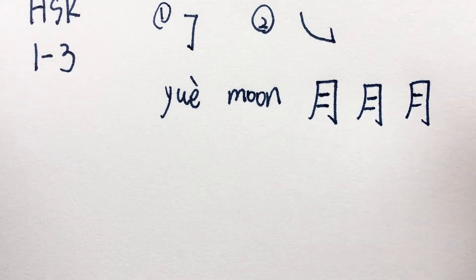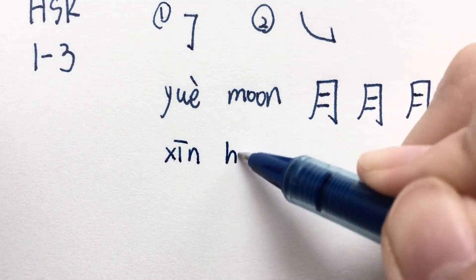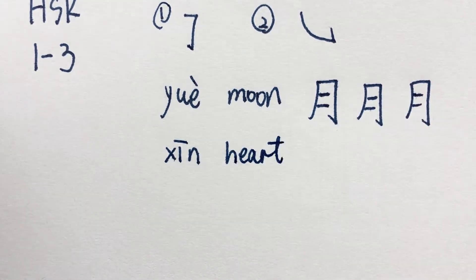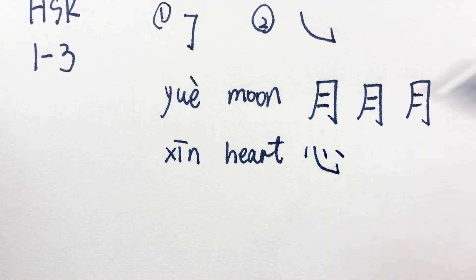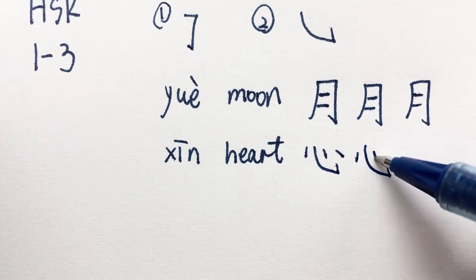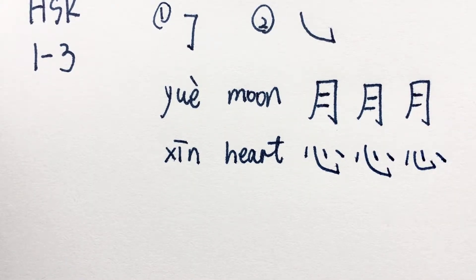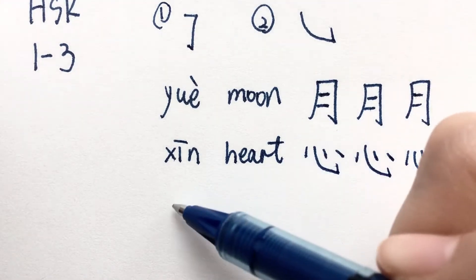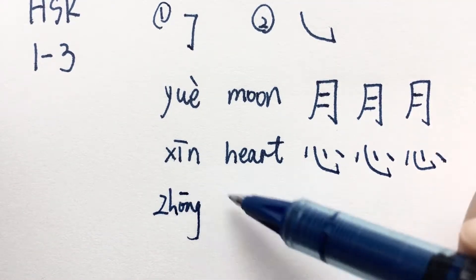The next word is 心, which means heart. So a dot, and then our new stroke number 2 — 卧勾, a line with a hook — and then a dot on the top and another dot on the right side. So 心: 点, 卧勾, 点, 点.